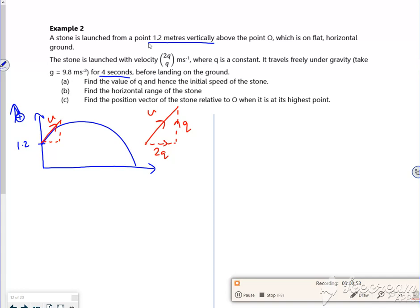It lands in 4 seconds, that's good. So I know my flight time is 4 seconds. Find a value of q. Right then, so I'm going to use the flight time. I know it hits the ground, so it's 1.2 meters below where it started from, so that's minus 1.2.